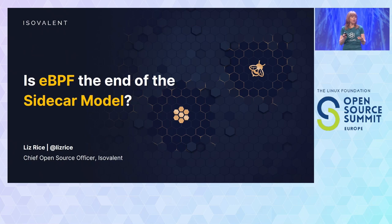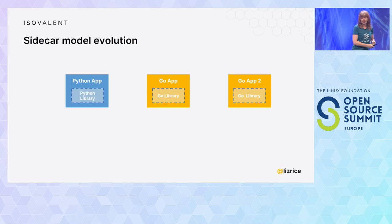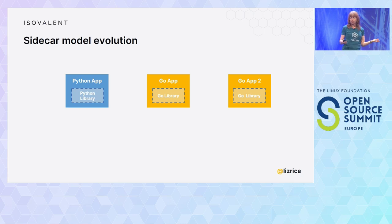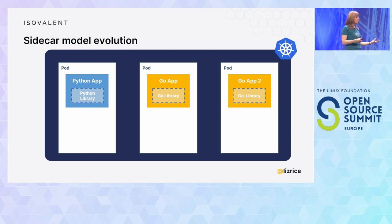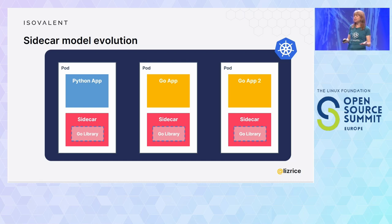These tools have often been deployed using a model called sidecars. That model has got us a long way, but eBPF opens up a whole new approach that I think is better in many circumstances. Before containers, we used library code to share common functionality across multiple applications. When we move our apps to Kubernetes, we put apps into containers, containers run in pods, and that gives us the opportunity to pull common functionality out into a separate container injected into every pod — called a sidecar. This model has been widely used for logging, tracing, security, and service mesh.